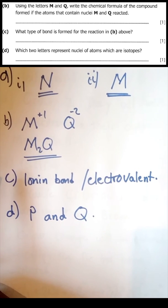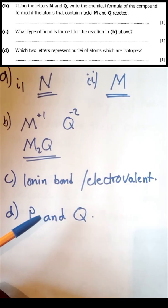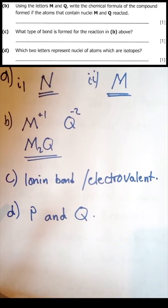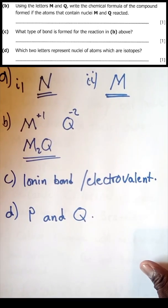Question 3d: which two letters represent nuclei of atoms which are isotopes? Isotopes P and Q. They have the same number of protons but different number of neutrons.